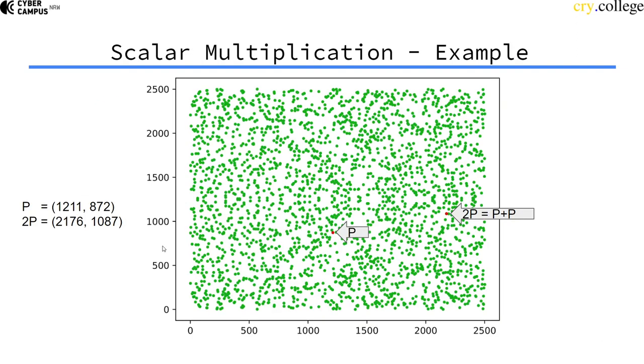So coming back to our toy curve with modulus 2503, we can see if I have this random point here P and I add it to itself, I get 2P, which is over here.